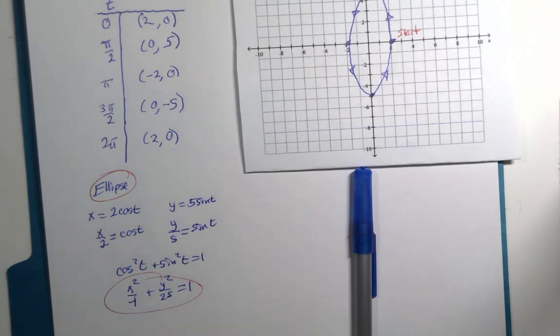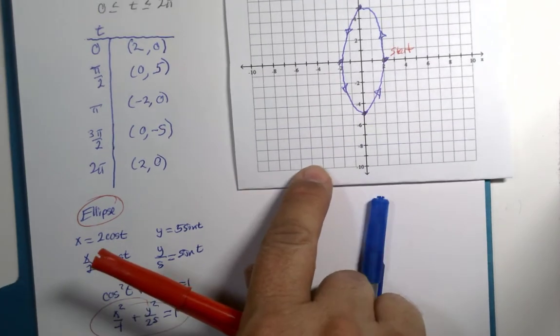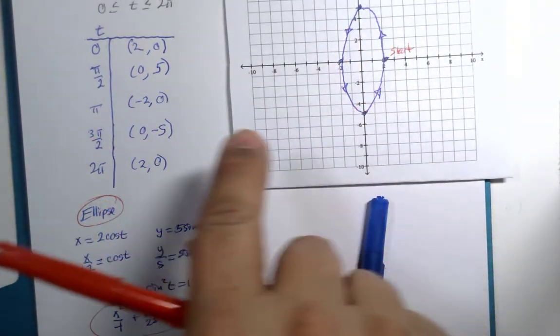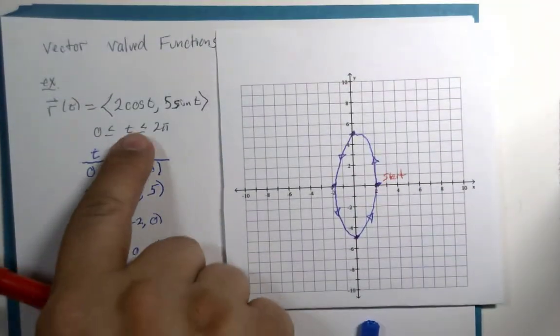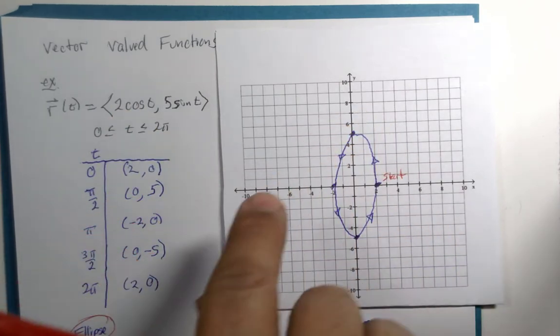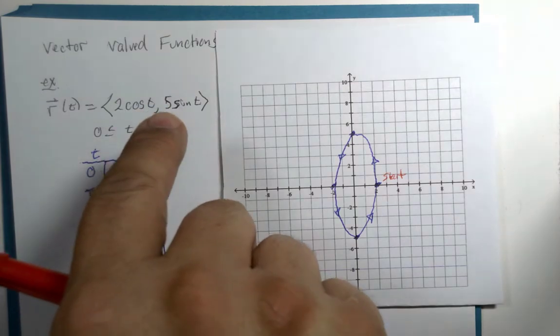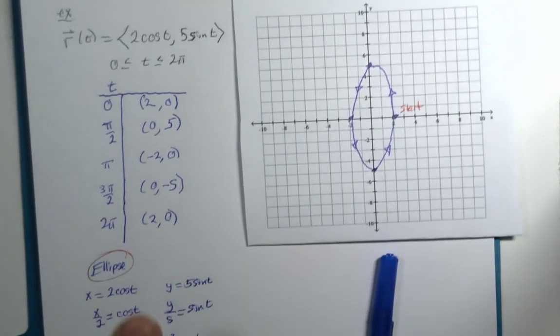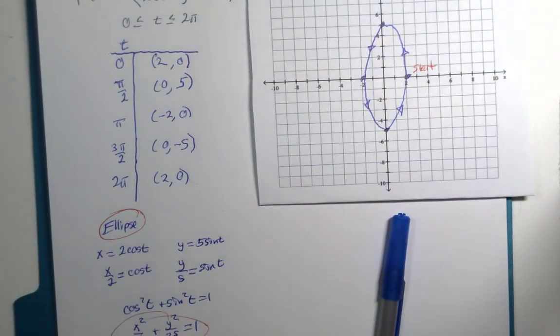The difference is this algebra is only the ellipse itself. This vector value function is actually the point that moves around the ellipse. This is like you and your vehicle driving somewhere. And this is like the road that you're driving on. The road doesn't move itself. The road is just the road.